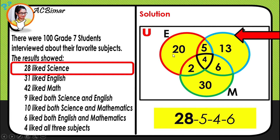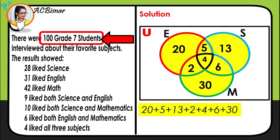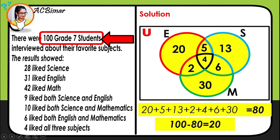We have now completed the Venn diagram, but we need to verify the total equals 100. We add all values: 20 plus 5 plus 13 plus 2 plus 4 plus 6 plus 30 equals 80. Only 80 students indicated they like English, science, or math, but there are 100 students total. So we subtract: 100 minus 80 equals 20.